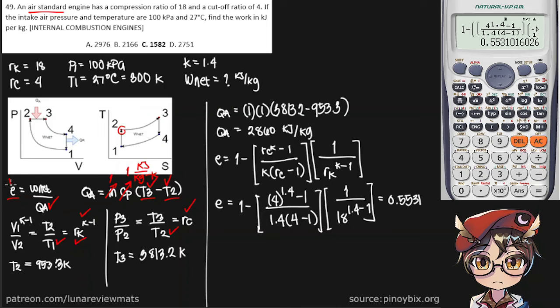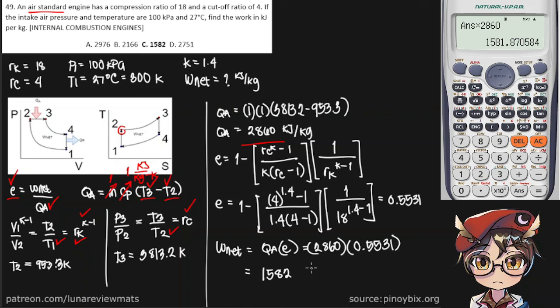Now we have this as well. So to get our network, we simply need to multiply QA by E. QA is 2860 kilojoules per kilogram, and this is our E, 0.5531. Let's verify if this is correct. And it looks like it is. Our work net is equal to 1582 kilojoules per kilogram. And that is our final answer.